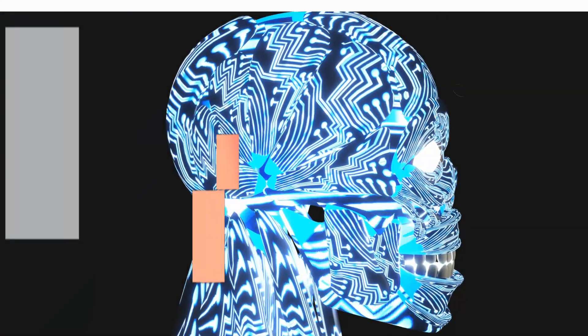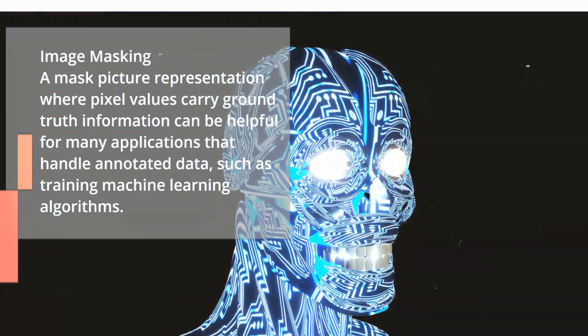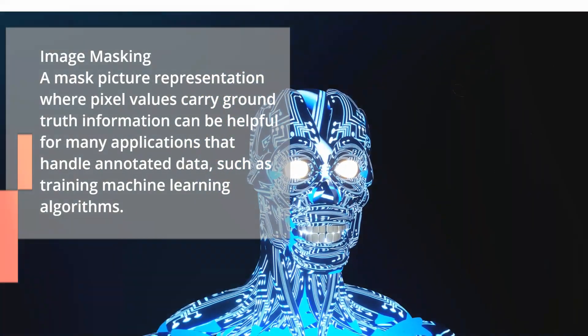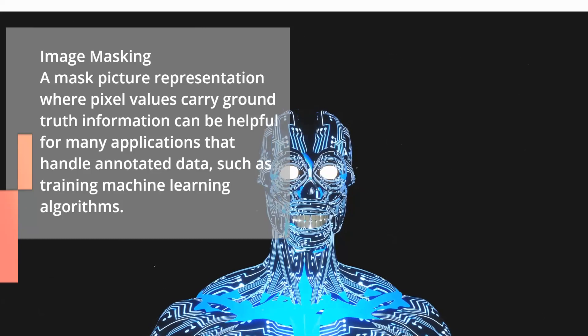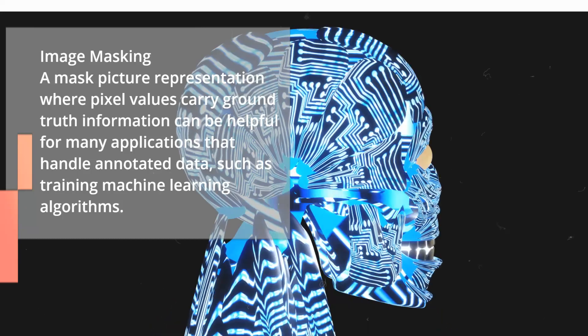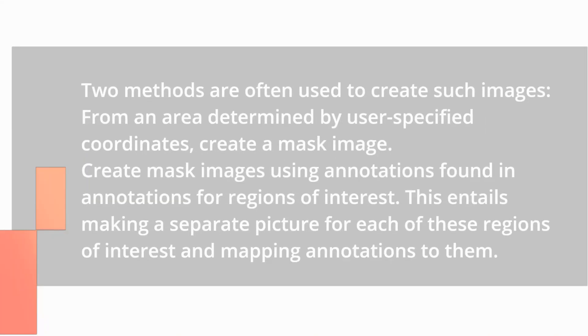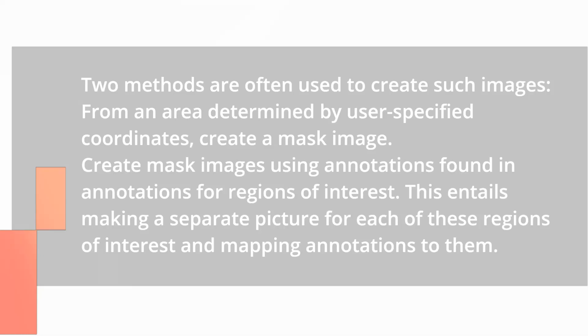Image masking uses a mask picture representation where pixel values carry ground truth information, which is helpful for applications that handle annotated data such as training machine learning algorithms. Two methods are commonly used: creating a mask image from an area determined by user-specified coordinates, and creating mask images using annotations found in regions of interest, which involves making a separate picture for each region and mapping annotations.